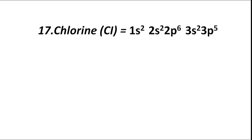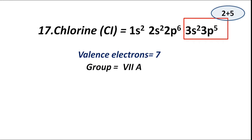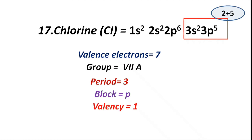Atomic number 17, chlorine (Cl), has electronic configuration 1s2 2s2 2p6 3s2 3p5. The valence shell is third or M, which contains 3s and 3p sub-shells. Total valence electrons are 2 plus 5, equal to 7. Group VIIA or 7A, period 3. Highest coefficient is 3, period third. Block P — valence electrons fill 3p sub-shell. Valency is 1 (8 minus 7 equals 1).